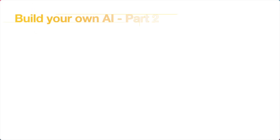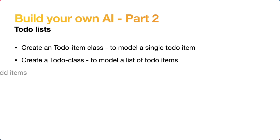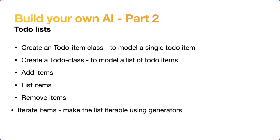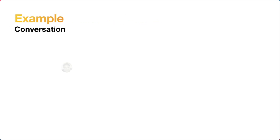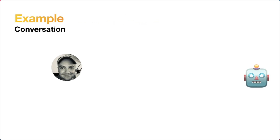Hey robot makers. Should we continue our journey building our own AI? In this session we're going to add a to-do list to our AI so we can add items, delete items, and get a list of what's currently on our to-do list. This is an example conversation between me and the robot.